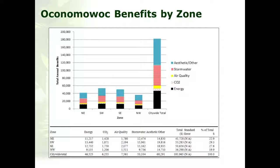Another advantage of iTreeStreets is that you can set up a project by zones and compare different areas within your community to see where more trees are needed. For example, an older established neighborhood may have most of the mature trees compared to newer subdivisions. This type of information allows you to be more strategic in your planning.